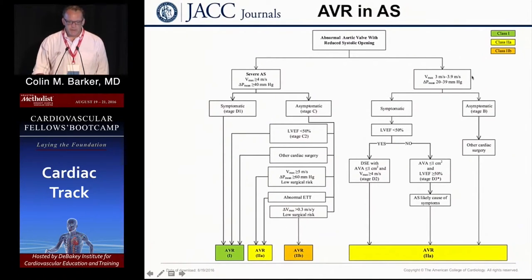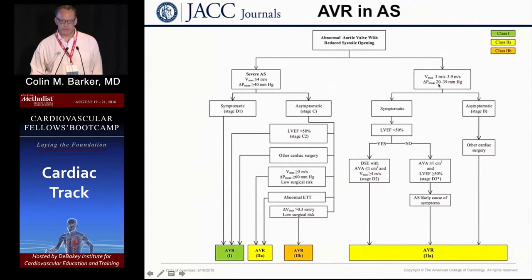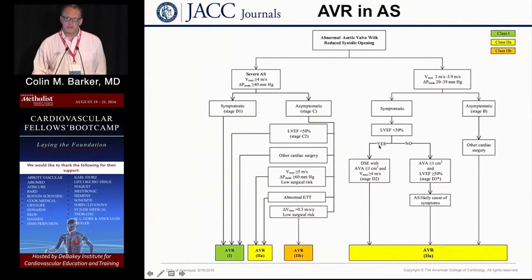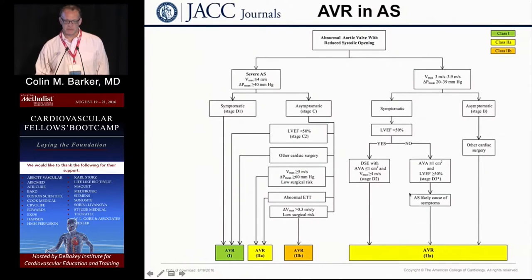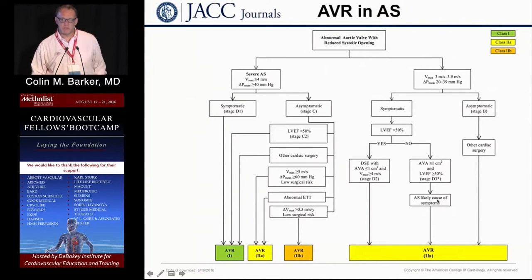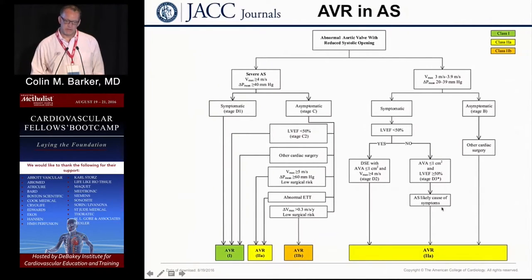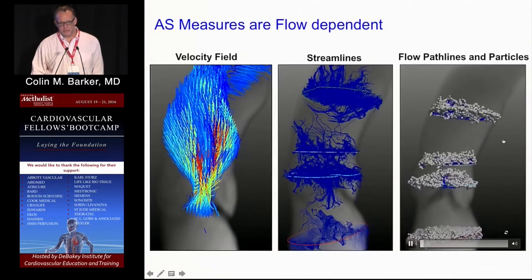For moderate aortic stenosis, you have to confirm it's truly moderate, because if echo criteria suggest moderate but the patient is symptomatic with a low EF, you want to rule out a low-flow state. Do a dobutamine stress echo: if they augment and it turns out to be severe, they get a new valve. If they don't augment but you're still convinced their symptoms are from AS, it's better to intervene — we know these patients do worse with medical management than with intervention. If asymptomatic and going for other cardiac surgery, it's a good time to intervene.